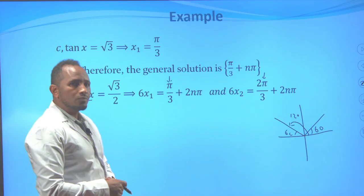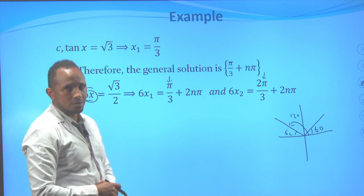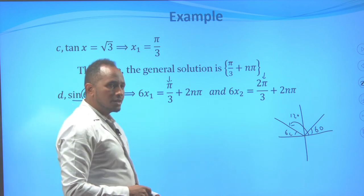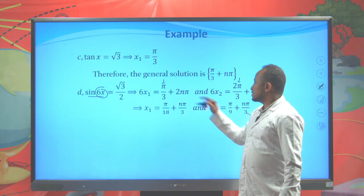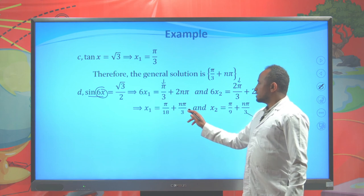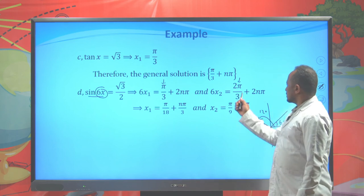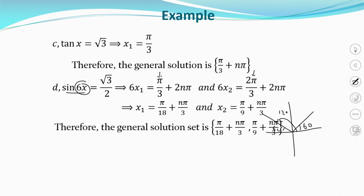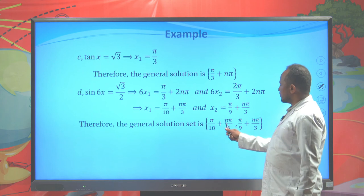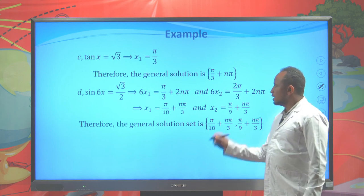To find x, divide by 6: x₁ = π/18 + nπ/3 and x₂ = π/9 + nπ/3. These two are the general solutions for sin(6x) = √3/2. The general solution is: π/18 + nπ/3 and π/9 + nπ/3.